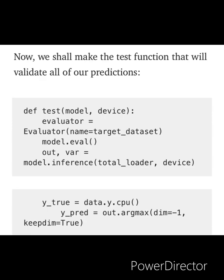The test function is there to validate our predictions. We define the test model function, which returns an inference. We compare the true dataset value with the predicted dataset value, take that as the loss function gradient, and feed it through backpropagation to all layers.